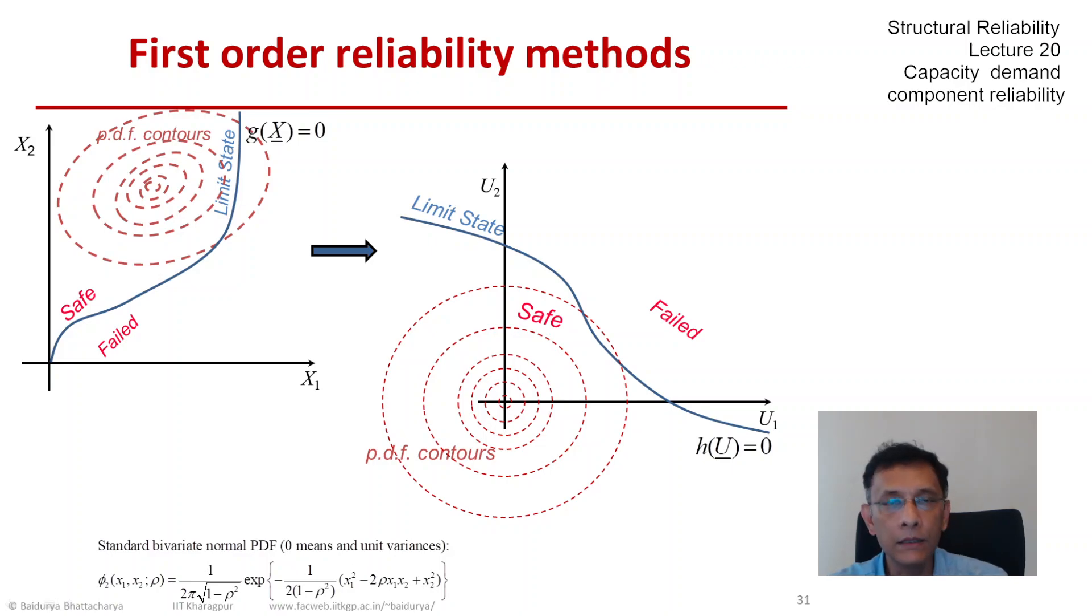Their means are each zero, their variances are each one. You see that the expression in the exponential is like an ellipse. When rho becomes zero, then we have the standard independent bivariate normal and now the function in the exponential are just circular in nature.